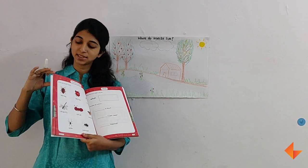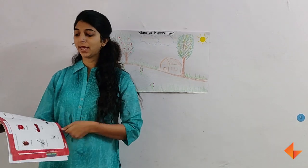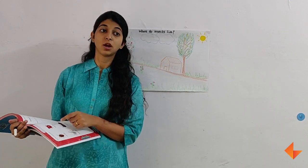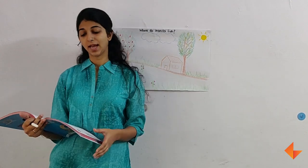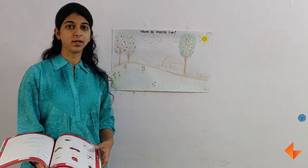Once they have done that, start discussing each insect and ask the children where have you seen this insect? Where do you think it lives? And as the children answer, draw it onto the chart and discuss.